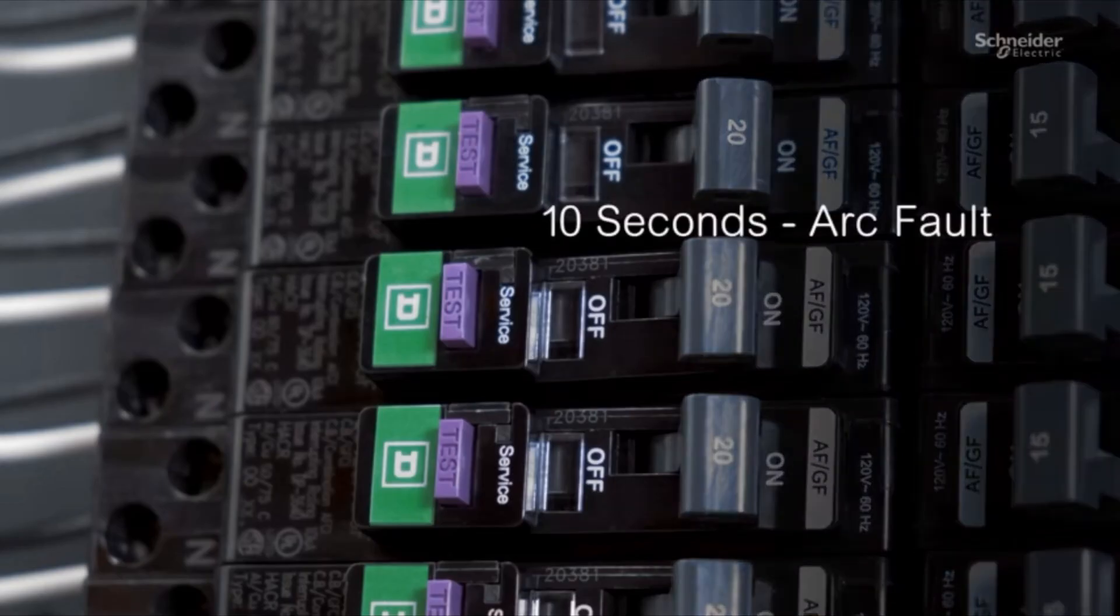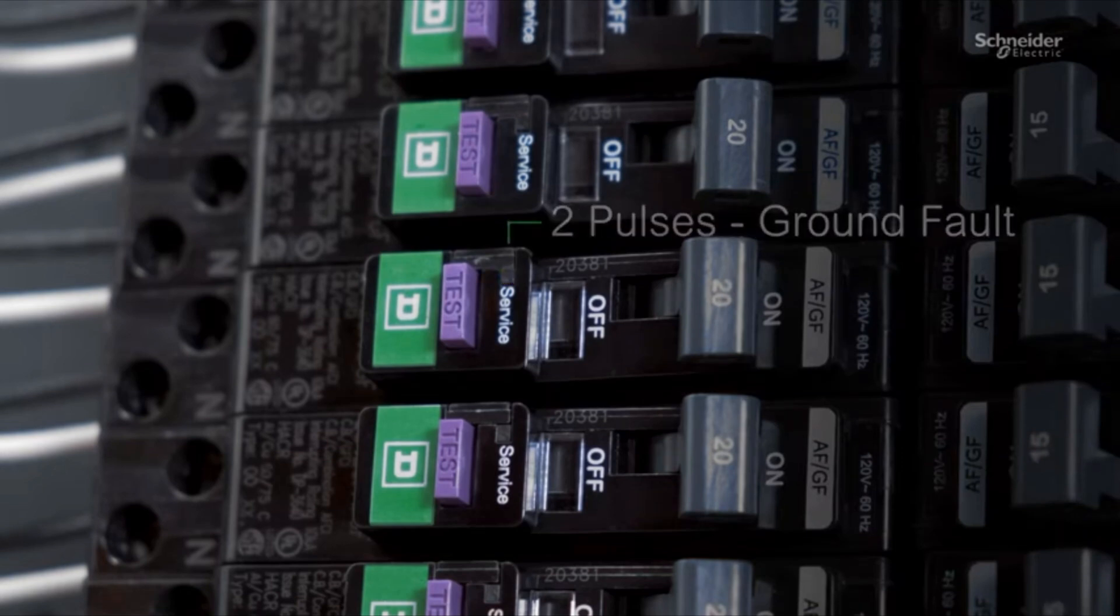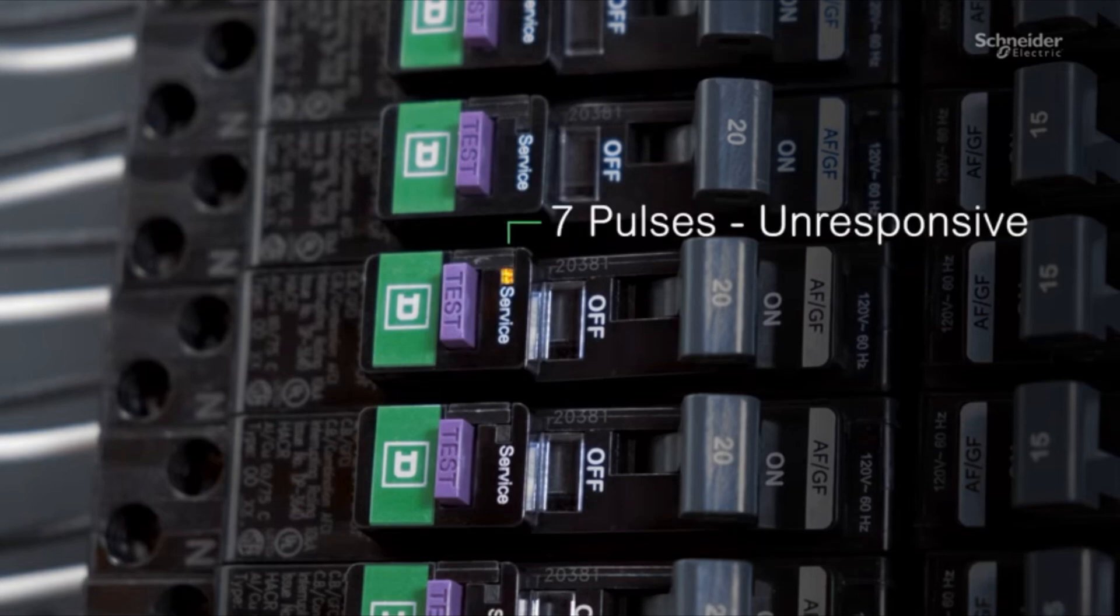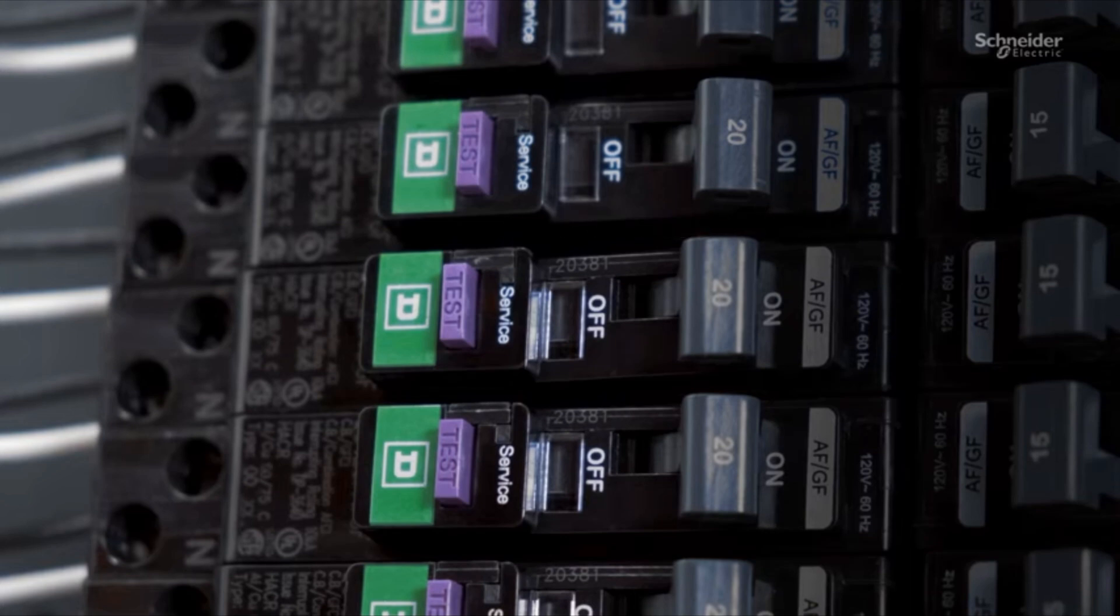If the LED lights up solid for 10 seconds and then turns off, it's an arc fault. If the LED pulses two times, it's a ground fault. If the LED pulses four times, it's a grounded neutral. If the LED pulses seven times, the arc fault protection is unresponsive, which means you should proceed with testing using the time saver diagnostic protocol.